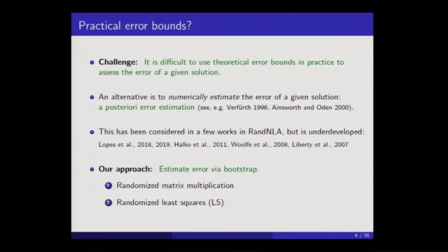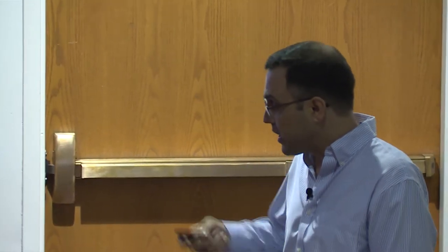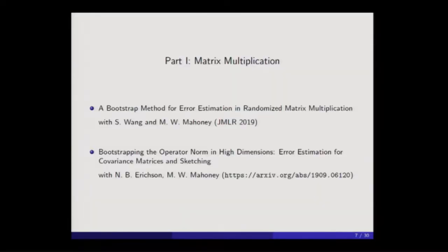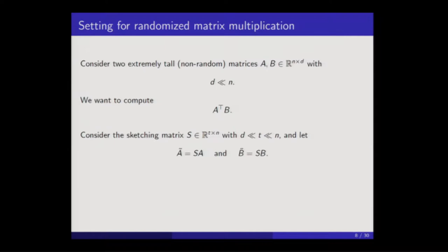In this talk I want to describe this problem in the context of matrix multiplication and least squares. This is by no means the only set of situations where you could try to do this, but hopefully it will give some indication of what is possible. The talk is broken into two parts. The first part will be on matrix multiplication, and the material comes from two papers — one appeared this year at JMLR, the other was recently posted to arXiv. The main difference between these two papers is that one focuses on error as measured in the entry-wise L-infinity norm, and the more recent one focuses on spectral norm error.